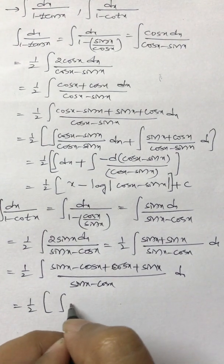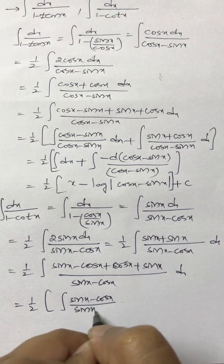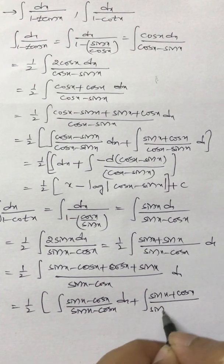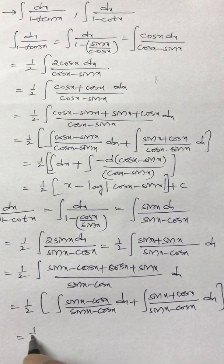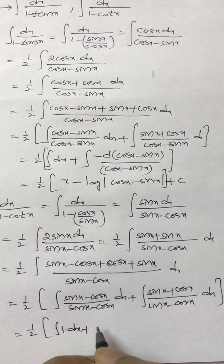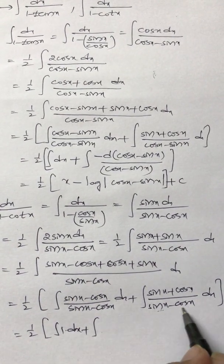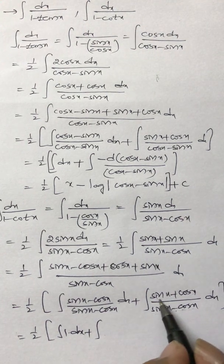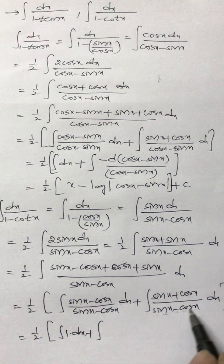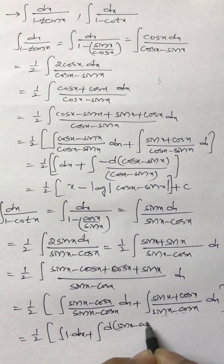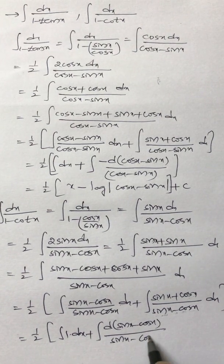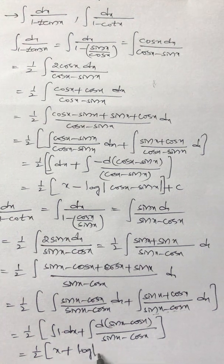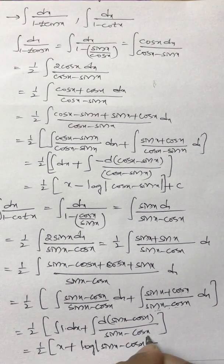So 1 by 2 into integral of (sin x minus cos x plus sin x minus cos x) dx plus integral of (sin x plus cos x) by (sin x minus cos x) dx. The first integral gives integral 1 dx. For the second, the differentiation of sin x is cos x, and minus of differentiation of cos x is plus sin x, so cos plus sin is the differentiation of sin x minus cos x. So this is 1 by 2 into x plus log mod of sin x minus cos x plus c.